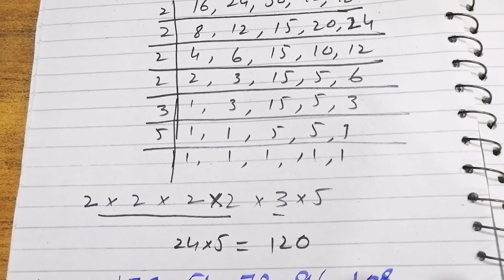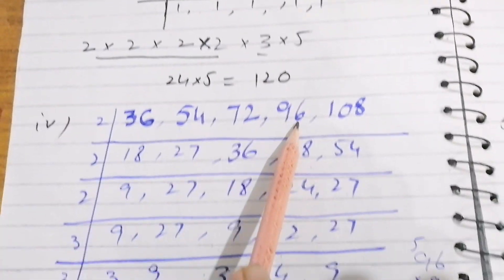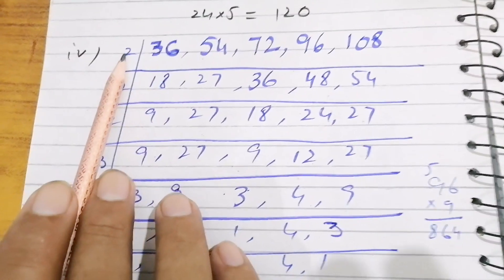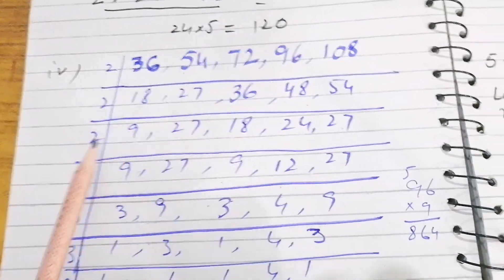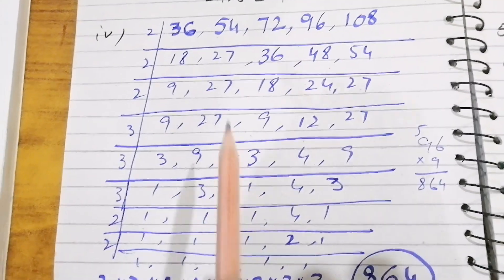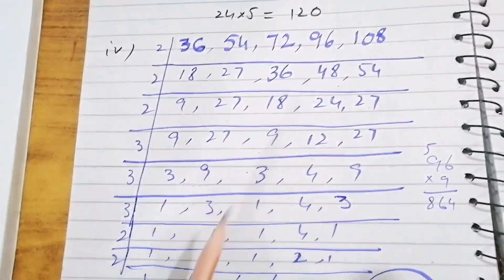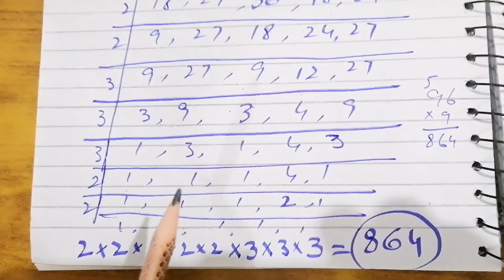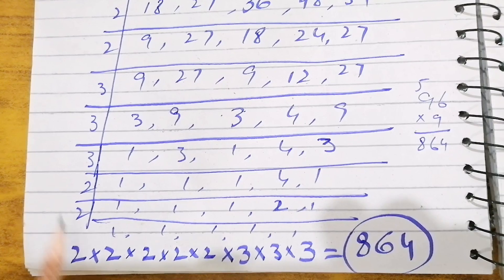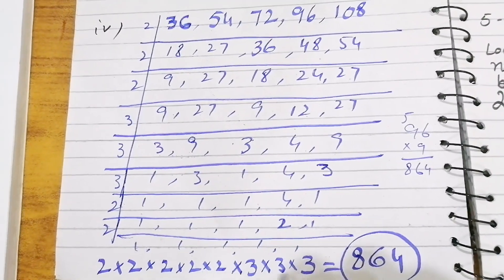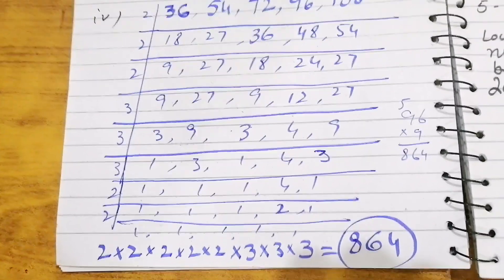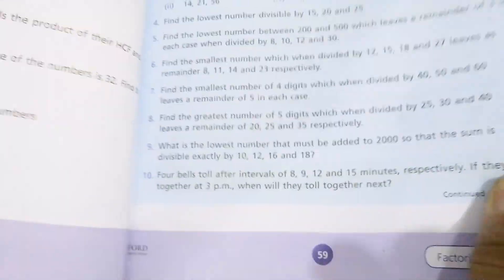The last part of Question 3 is 36, 54, 72, 96, and 108. We start dividing by 2, take all the factors, and you have to practice a lot to calculate these. Multiplying all the factors, we get 864.